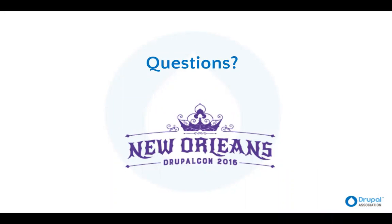That concludes how to write a winning abstract. We had a comment in reply to the community involvement question — in the past we've had community voting on sessions, but it didn't yield the most helpful results. Part of the reason we have track chairs is not just because they're content experts — they also know what to look for as far as presenter skills, which you can't necessarily get through a voting system.